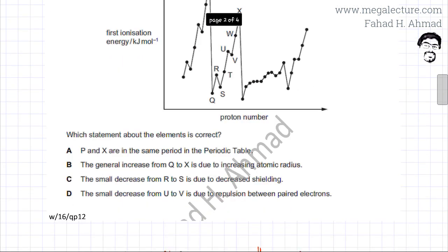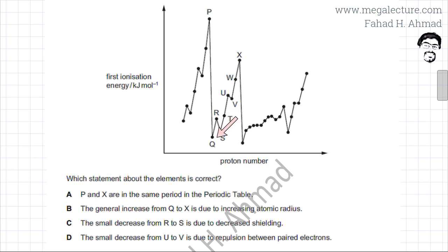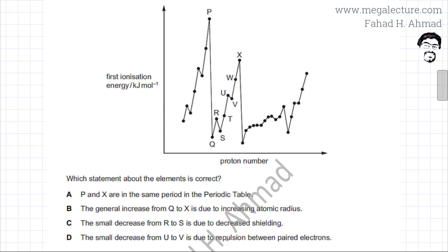The question asks which statement about the elements is correct. Option A states that P and X are in the same period of the periodic table. Looking at P and X on the graph, one period shows the trend in ionization energies, and the other represents a lower period. So P and X are in totally different periods — they would be in the same group, both being noble gases, but option A is incorrect.